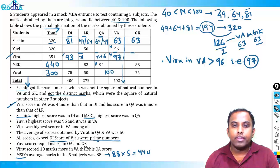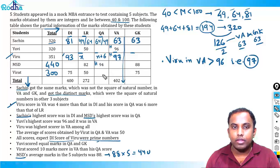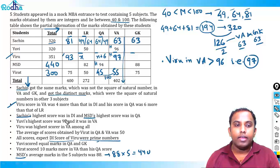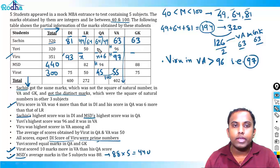Virat scored 10 marks more in VA than QA, and their sum is 100. If equal they'd each be 50, but shifting 5 marks gives QA = 45 and VA = 55. UV scored equal marks in QA and GK — mark these as y and y.